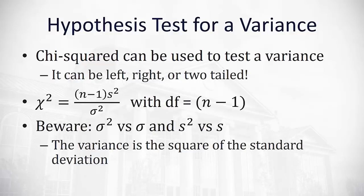Be very careful here. Sigma-squared is the variance of the population, and sigma is the standard deviation of the population. S-squared is the variance of the sample, and S is the standard deviation of the sample. The variance is the square of the standard deviation, so if we've been given the variance, it's already been squared and we do not need to square again. But if we're given the standard deviation, we'll need to square it in our calculation.